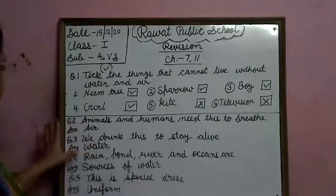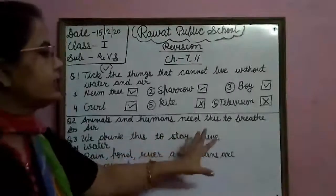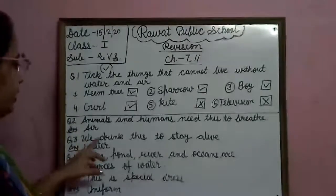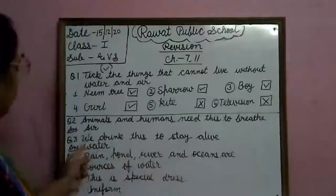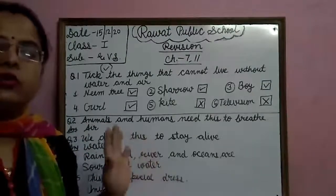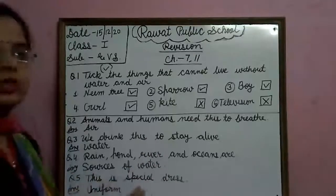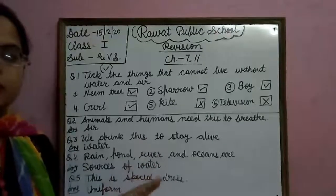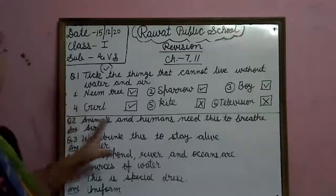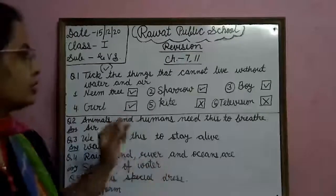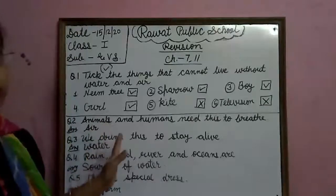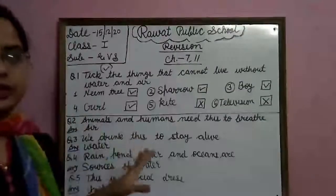So we will revise again: animals and humans need this to breathe — air. Question 3: we drink this to stay alive — water. Rain, pond, river and oceans are sources of water. This is a special dress — uniform. Uniform is a special dress. So this is the revision of Chapter 7 — Our Needs. Channel, please learn and write these question answers in your notebook for the preparation of the third test exam.